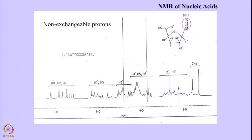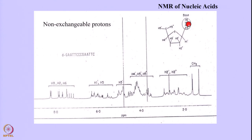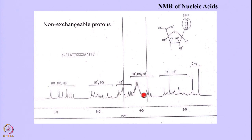Here is a typical spectrum of a nucleic acid — a 14-mer DNA segment: 5'-CGAATTCCCG-3' type sequence. The nomenclature is listed: 1' and in the bases you have H6, H8, H2, and H5. H6 and H5 are present in cytosine; H8 and H2 are present in adenine; in guanine you only have H8 — at the H2 position there is an amino group. All these H8, H2, and H6 protons appear in the aromatic region of the spectrum.